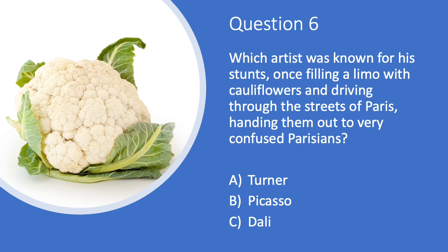Question six. One of our artists was known for doing various stunts, and once he filled a limo with cauliflowers and drove through the streets of Paris, handing them out to very confused Parisians. But which one of our artists do you think it was? A. Turner, B. Picasso, or C. Dali?